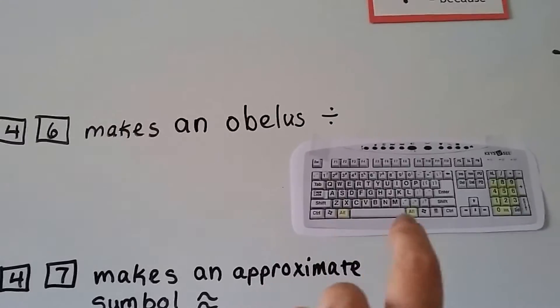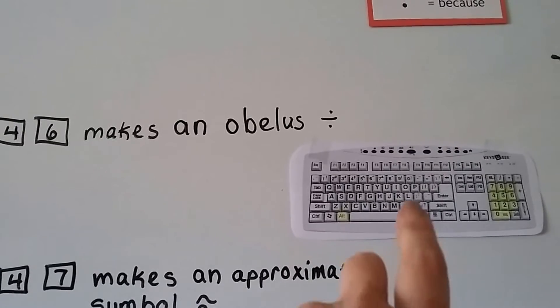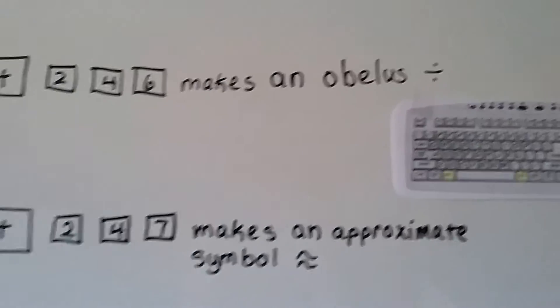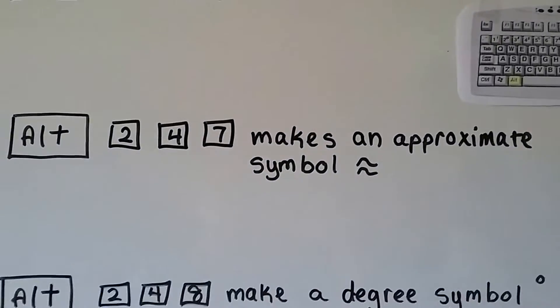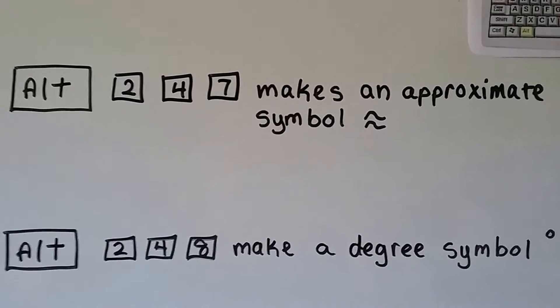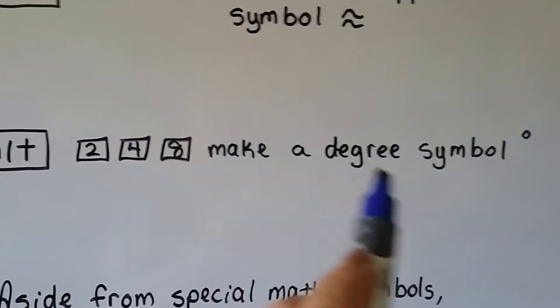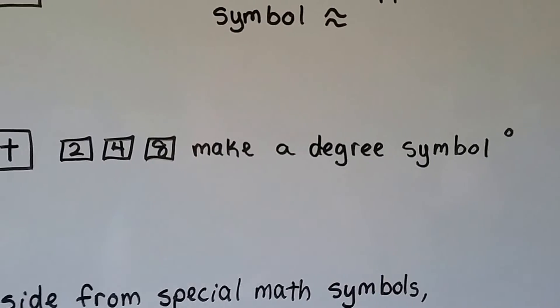You can hold down this ALT key or this ALT key. It doesn't matter, as long as you're holding one of them down while you're typing the numbers in. If you hold down ALT and hit 247, it'll make an approximation symbol. ALT 248 makes a little degree symbol.